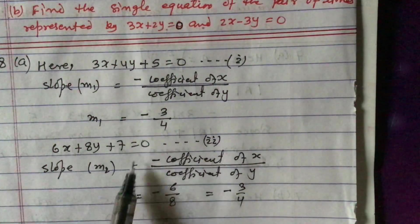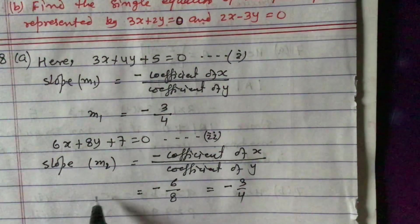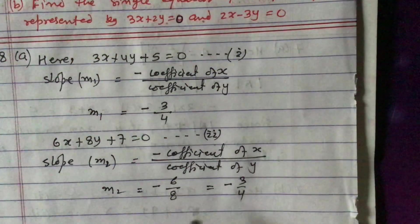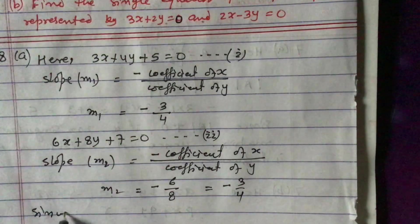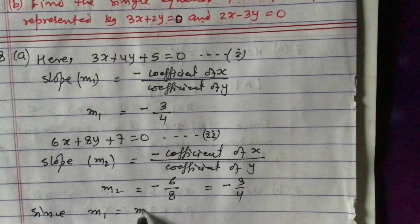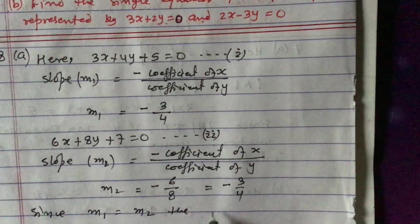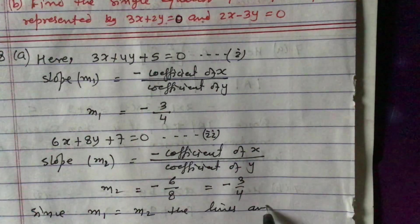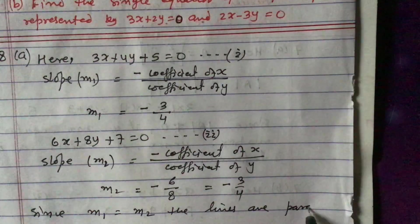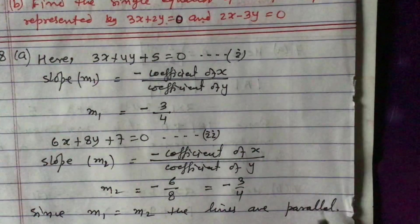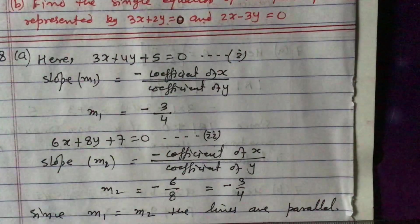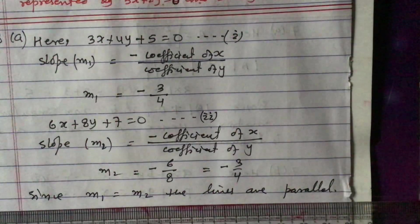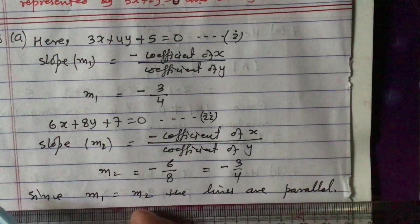Now look here — if you compare slope m1 and m2, the slopes are equal. Since m1 equals m2, the lines are parallel. This is the relationship between the two lines. We are asked to find the relationship, and that relationship is that the lines are parallel.